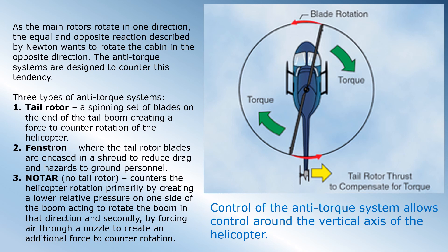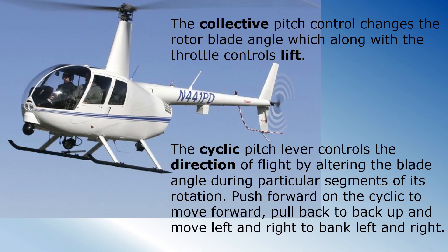Control of the anti-torque system allows control around the vertical axis of the helicopter. There are two primary pitch controls in a helicopter. The collective pitch control changes the rotor blade angle, which along with the throttle, controls lift. The cyclic pitch lever controls the direction of flight by altering the blade angle during particular segments of its rotation. Push forward on the cyclic to move forward, pull back to back up, and move left and right to bank left and right.